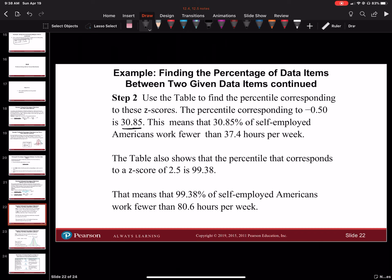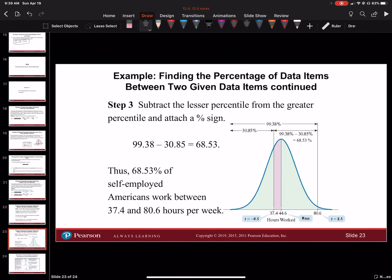The table shows the percentile that corresponds to a z-score of 2.5 is 99.38. That means 99.38% of self-employed Americans work fewer than 80.6 hours per week. Now we take 99.38% minus 30.85%, and we get 68.53%. That means 68.53% of self-employed Americans work between 37.4 and 80.6 hours per week.